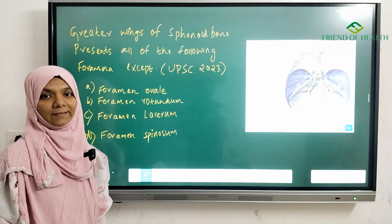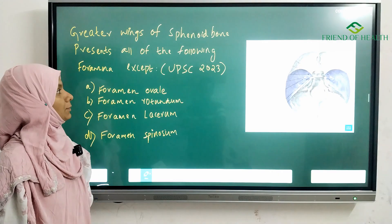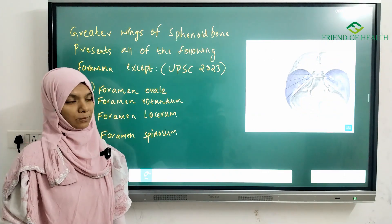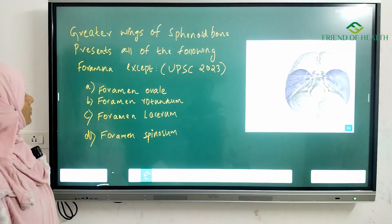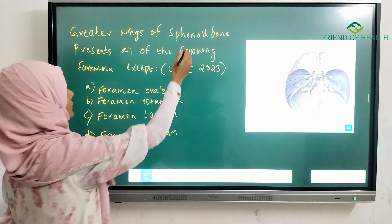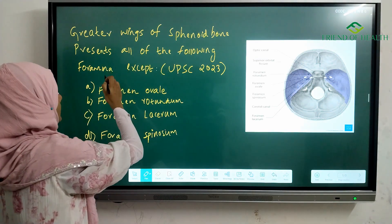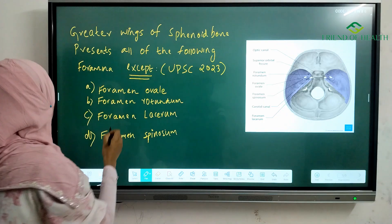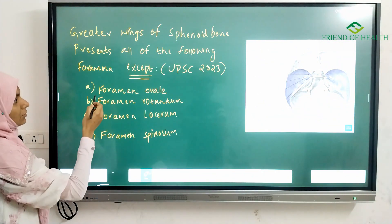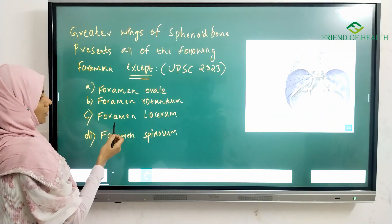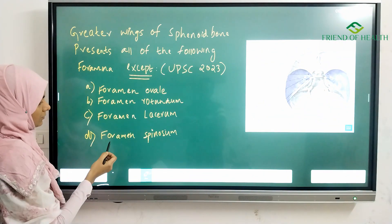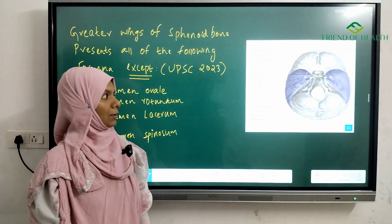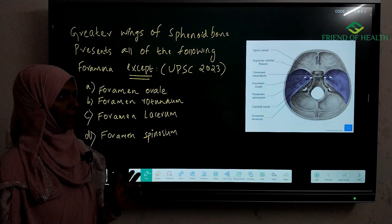Hello friends, today we will see an important question from UPSC 2023 anatomy portion. The question is: greater wings of sphenoid bone present in all of the following foramina except — the options are foramen ovale, foramen rotundum, foramen lacerum, and foramen spinosum. In this video, let's see how to use visual images for studying anatomy and how to rule out certain foramina using visual images.